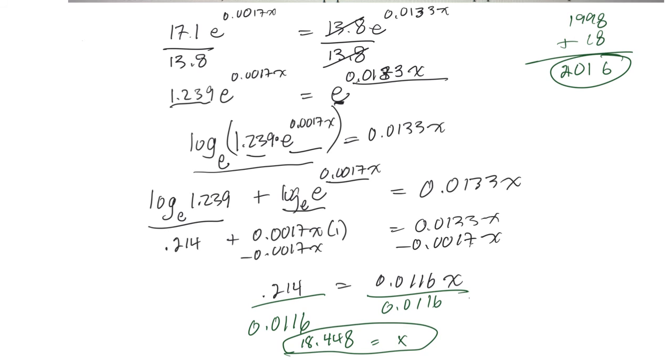But then it says, estimate what the population will be when they're equal. So this is when they get to be equal, at 18.448 years after September of 1998. But then I'll need to plug that back in to one of these equations. One of those equations up there. So let's try that. Let's do G of X. G of X is equal to 13.8E to the 0.0133X. Let me try that on the calculator.